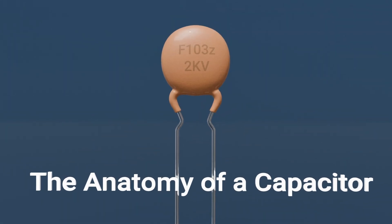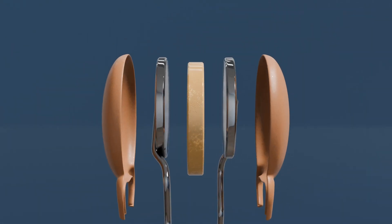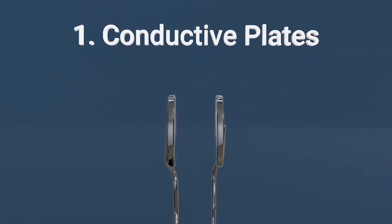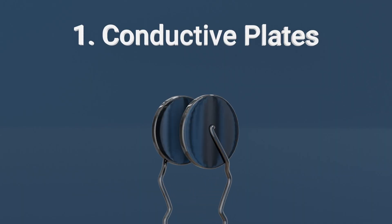The anatomy of a capacitor: Let's break down the parts of a typical capacitor. 1. Conductive plates: these store the electrical charges. They're often made of aluminum or another metal.